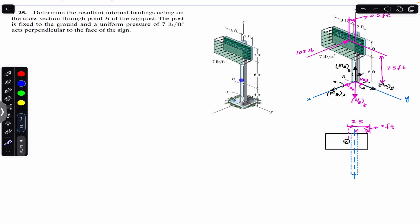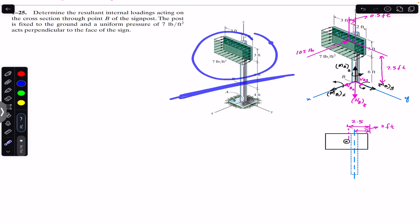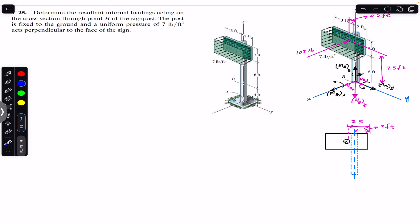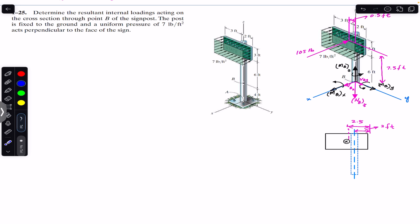Since we want to find the internal loadings on the cross-section through point B, what we will do is pass a cutting section through here and then consider the upper part of the sign post. This will be our free body diagram. So first of all we have to find the force acting on this sign post.